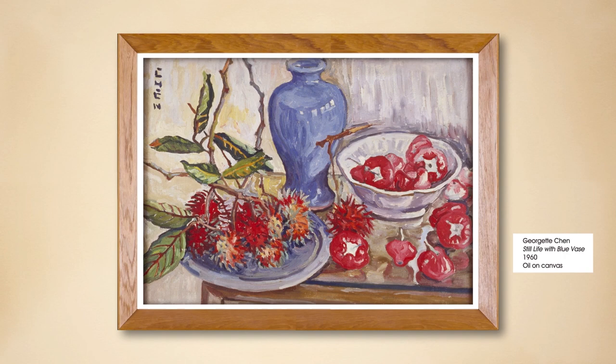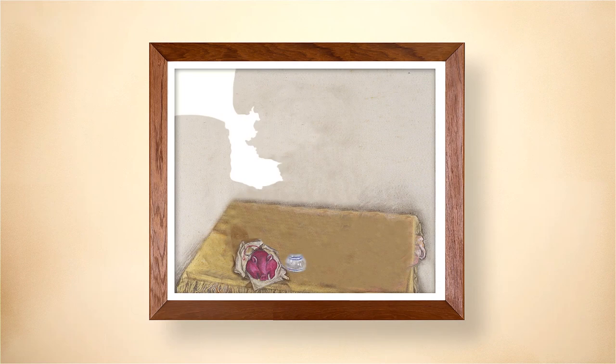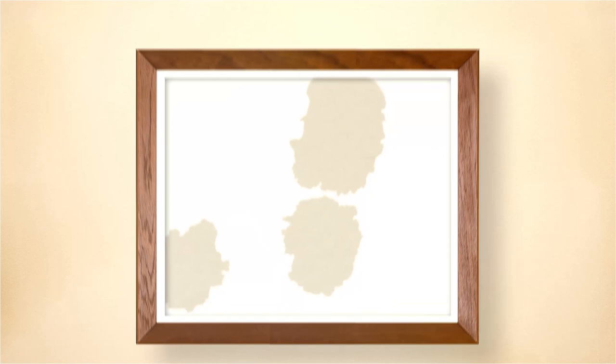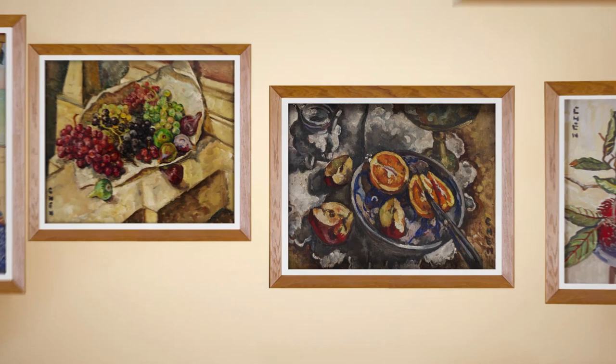Through these examples by Georgette Chen, we can see how artists use composition to achieve their desired expression of a chosen subject. These choices shape how we encounter and engage with a painting's subject matter. Even ordinary, everyday scenes can be made more compelling and dynamic through careful and considered composition.